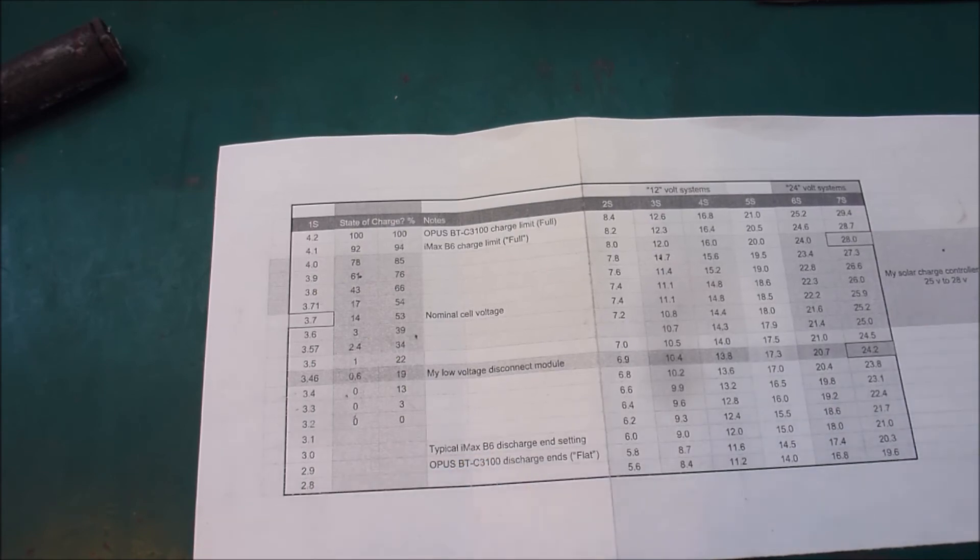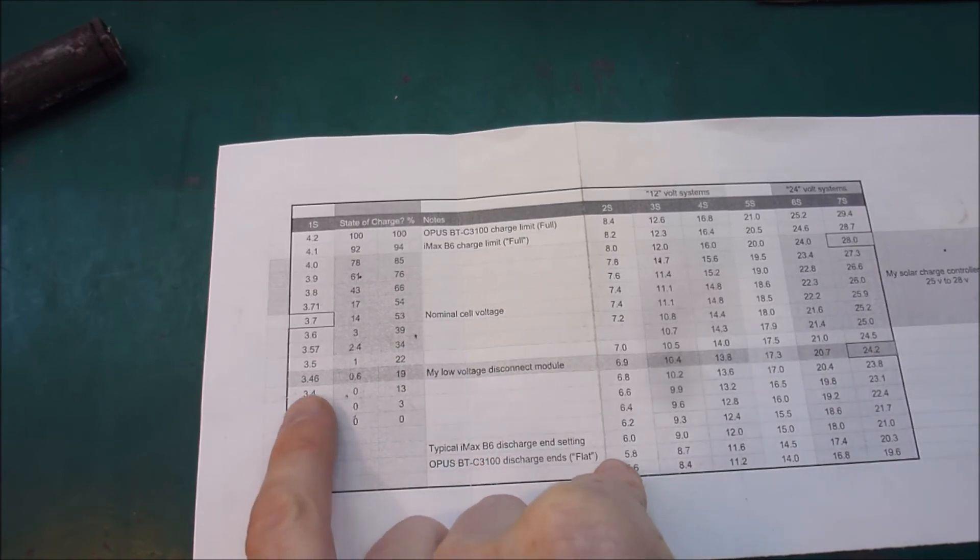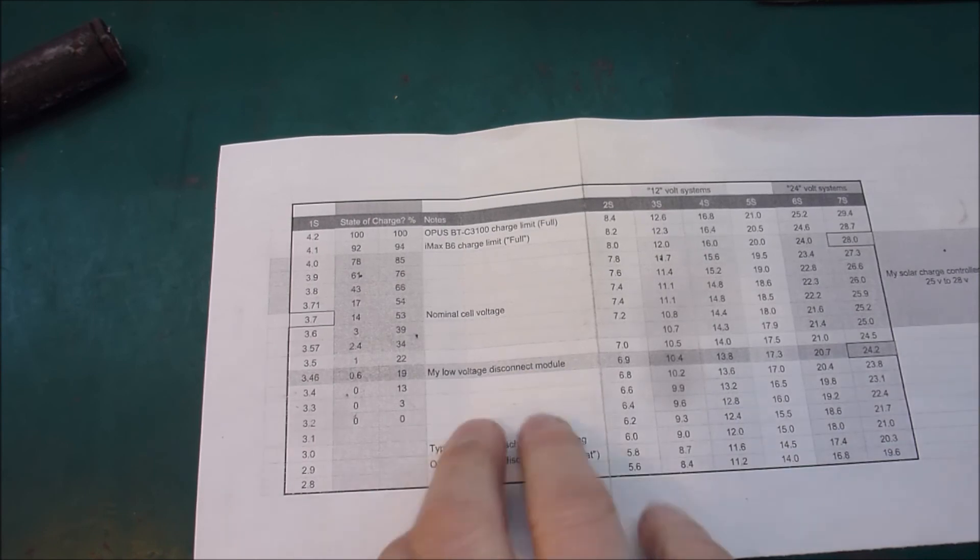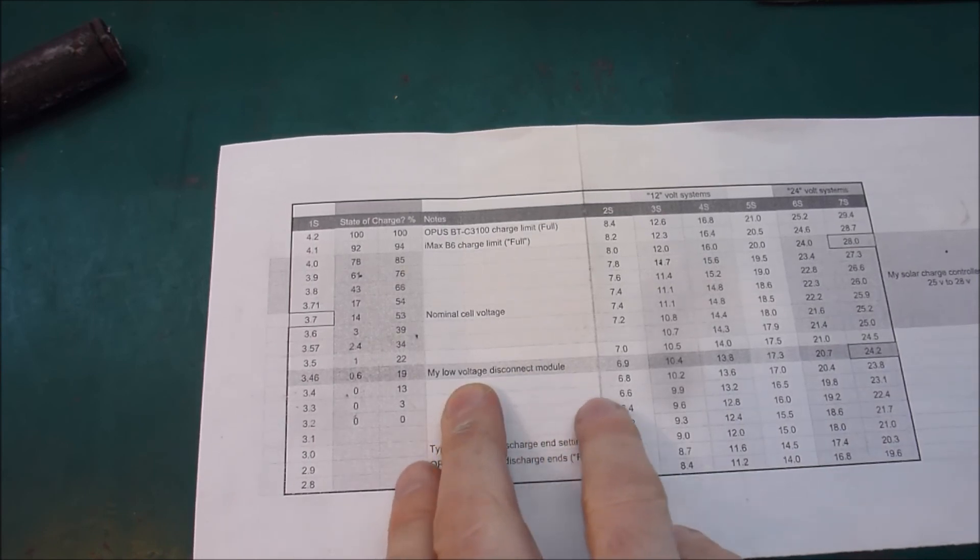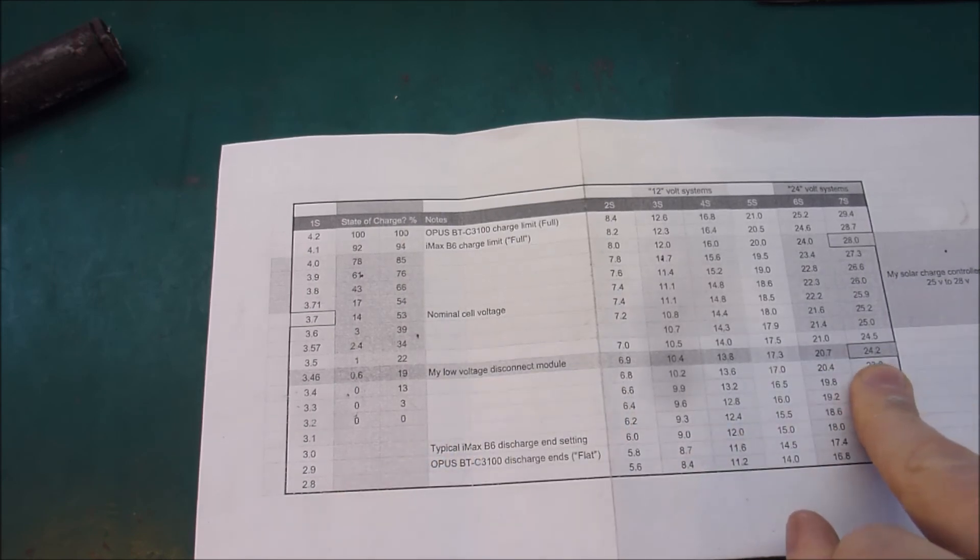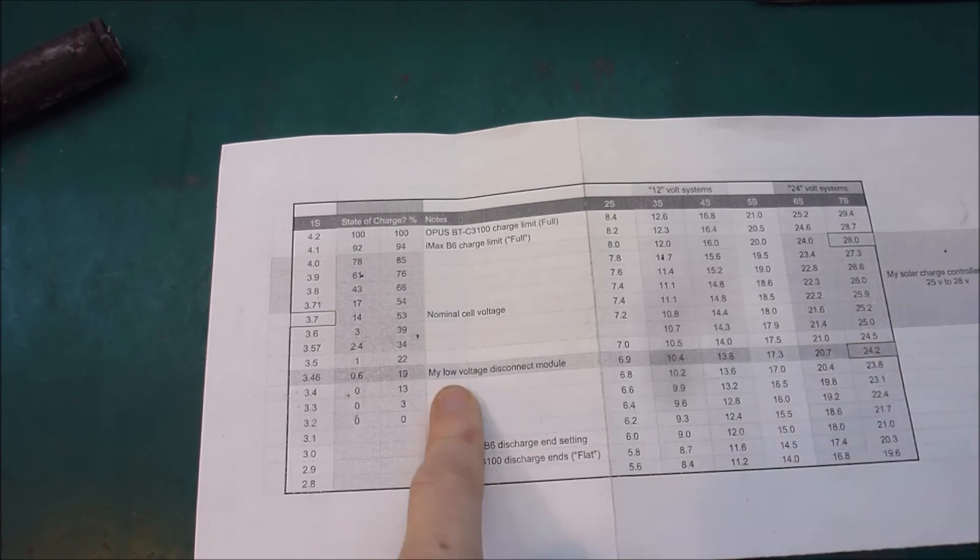The other thing that I have got running on my system is an independent low voltage disconnect module. So it's a little board that I got from AliExpress that will disconnect my load from my battery when the battery gets down to 24.2 volts. That is my absolutely worst case scenario.